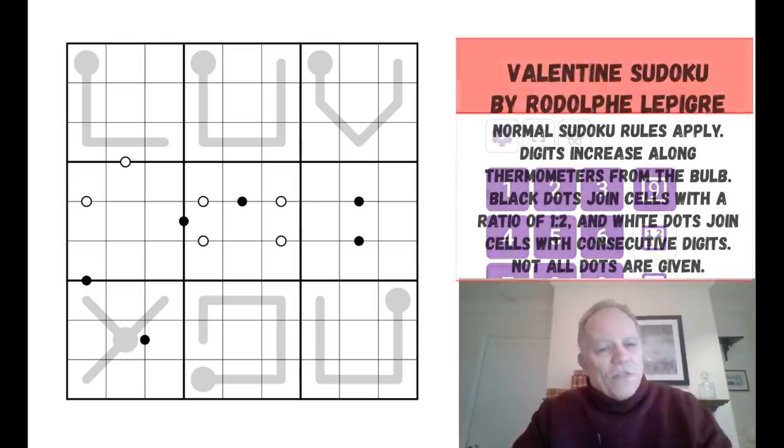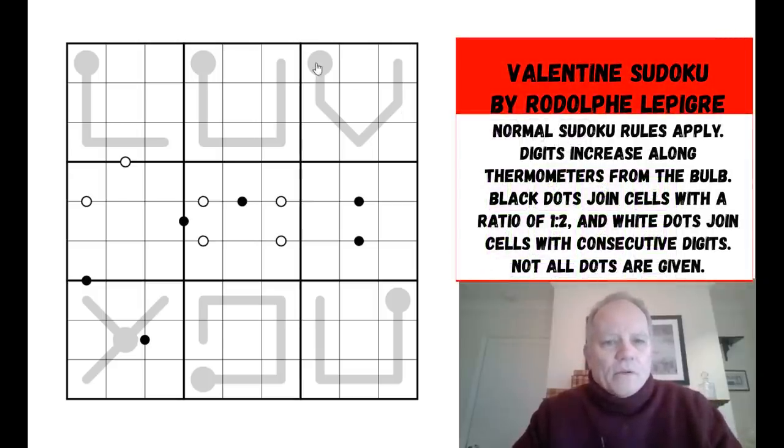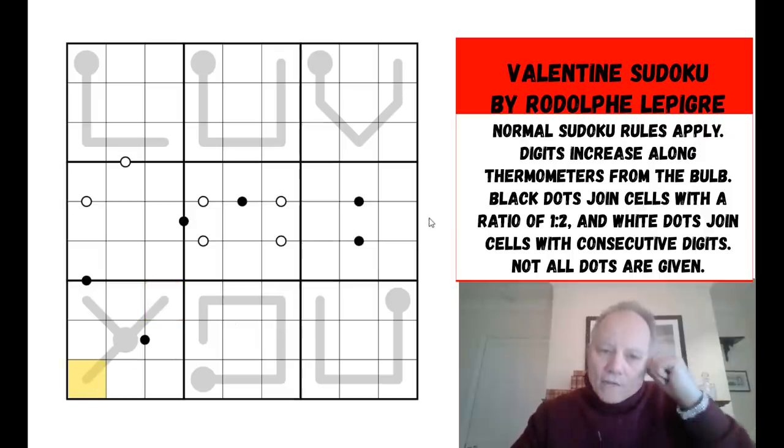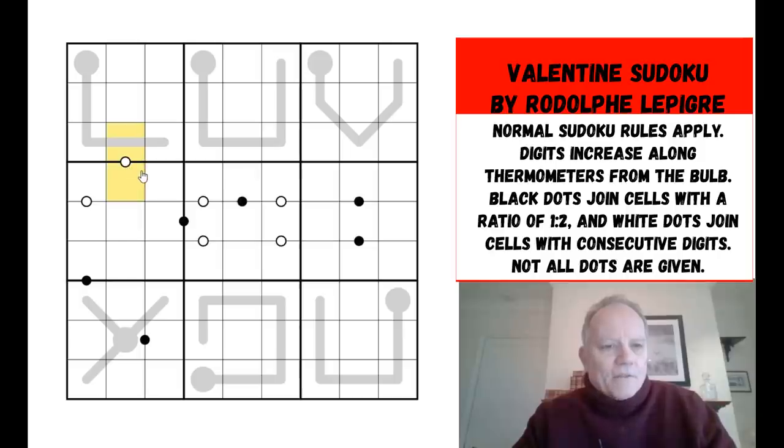Do try it on the link below the video. The rules are, thermo rules mean that numbers along thermos must increase from the bulb to the end here. They must increase in each direction from the bulb to each of the ends. So that must be smaller than any of those three, I guess. Now, these are kropke dots. So black dots indicate a ratio of one to two between two cells. So that could be one and two, two and four, four and eight, or three and six. White dots indicate a consecutive relationship.